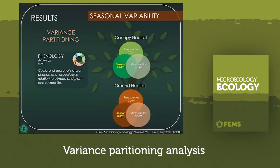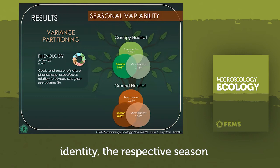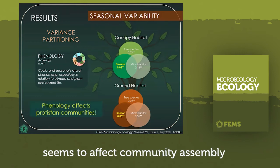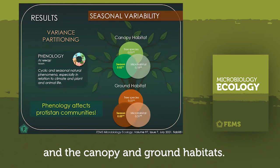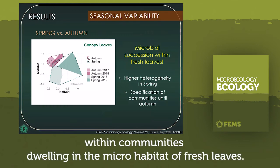Variance partitioning analysis of our data revealed that besides microhabitat and tree species identity, the respective season seems to affect community assembly in the canopy and ground habitats. Seasonal differences were particularly evident within communities dwelling the microhabitat of fresh leaves.